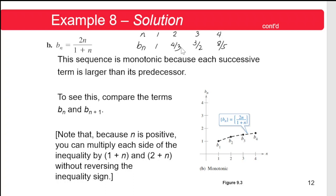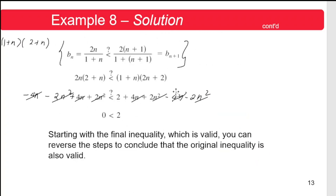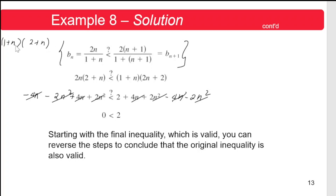To see this in general form, we compare terms b_n and b_{n+1}. From the given, b_n = 2n/(1 + n), and b_{n+1} is obtained by replacing n with n+1, giving 2(n+1)/(1 + (n+1)) = 2(n+1)/(n+2). We then multiply both sides of the inequality by the LCD — which cancels 1+n on one side and n+2 on the other.